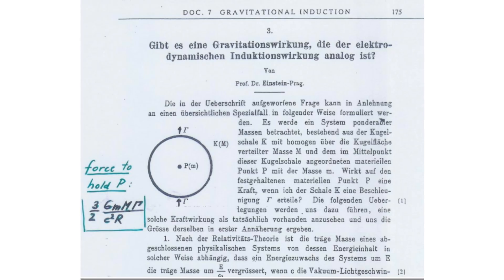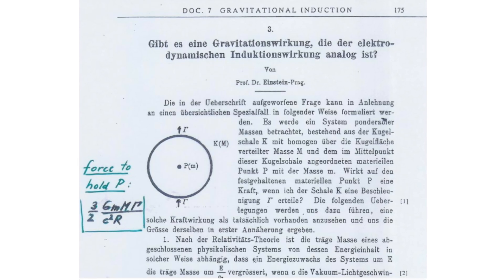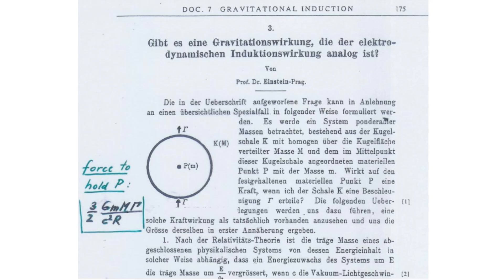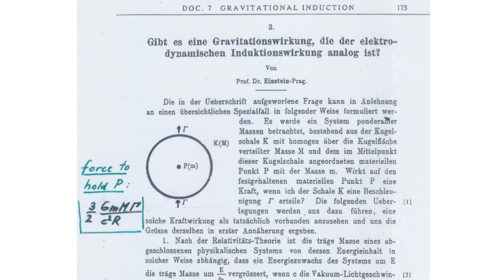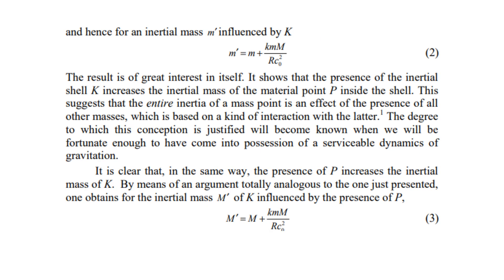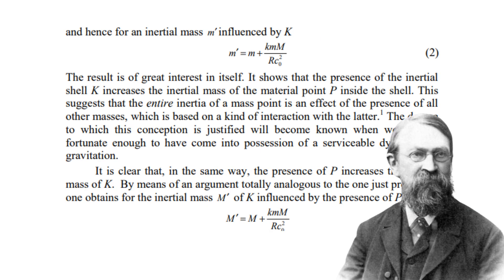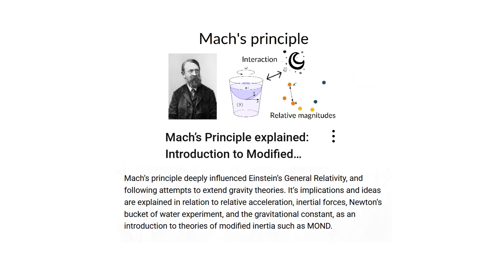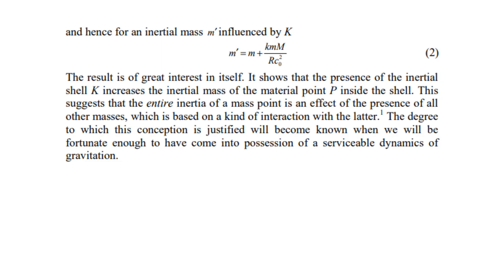But there is one effect that Einstein considered necessary in a complete theory of gravity, which is not satisfied by general relativity or gravito-electromagnetism. In 1912, Einstein published a short note describing how his relativistic theory of gravity, still under development, already hinted towards a fulfillment of Ernst Mach's ideas about the origin of inertia. We explain Mach's principle in another video. Einstein's idea, citing Mach,